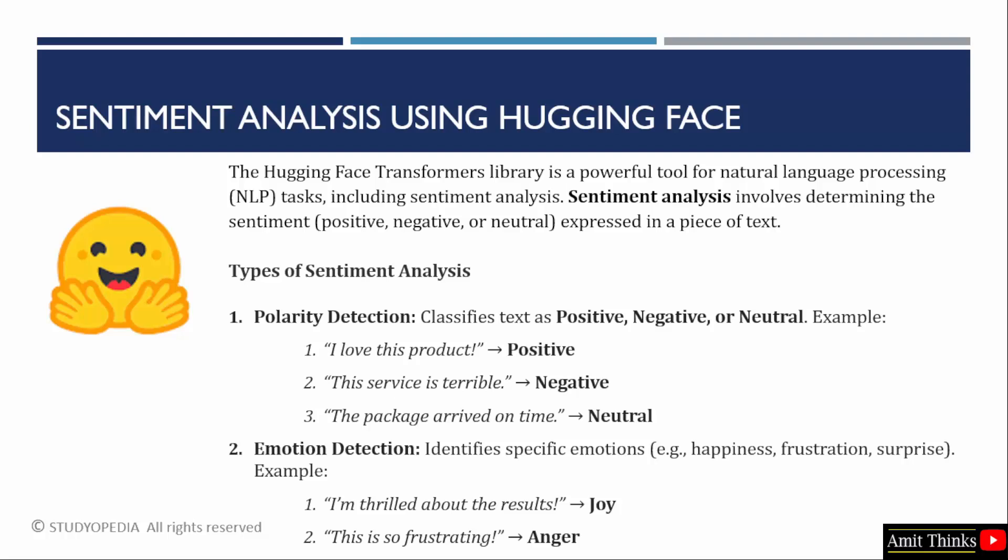When I explain the types of sentiment analysis, things will be more clear. The first type is polarity detection — that is positive, negative, or neutral. 'I love this product' is positive. 'The service is terrible' is negative. And when things are not clear, it will be neutral — like 'the package arrived on time.'